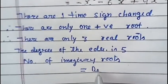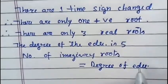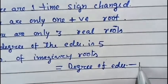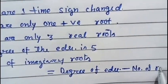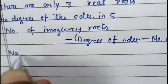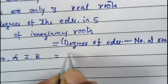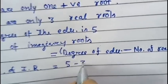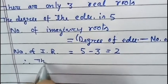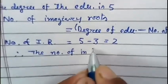The number of imaginary roots equals the degree of the equation minus the number of real roots. That is, imaginary roots = 5 minus 3, which equals 2. Therefore the number of imaginary roots is 2.